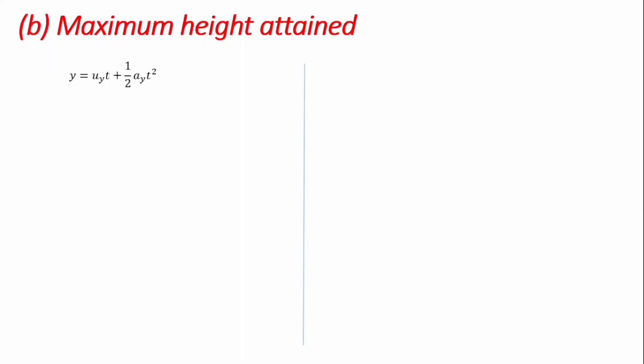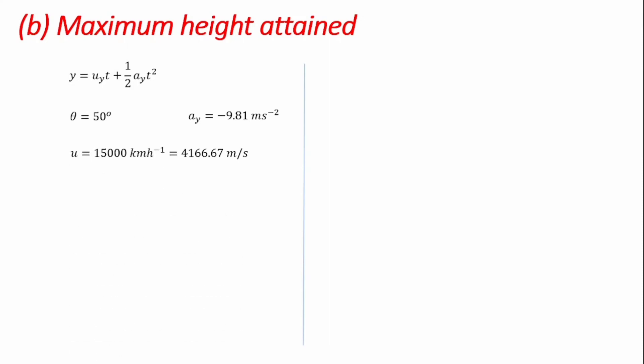To find the maximum height attained, we use the vertical displacement equation y = Uᵧt + ½aᵧt². With θ = 50° for the shortest time scenario, aᵧ = −9.81 m/s², and U = 4,166.67 m/s, the initial vertical velocity is Uᵧ = U sinθ = 4,166.67 sin50° = 3,191.85 m/s.